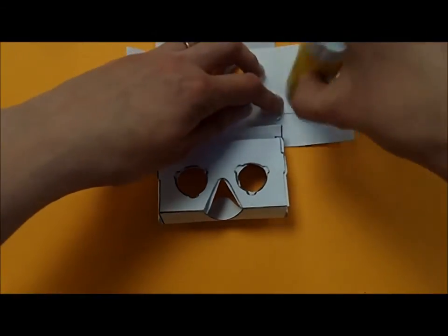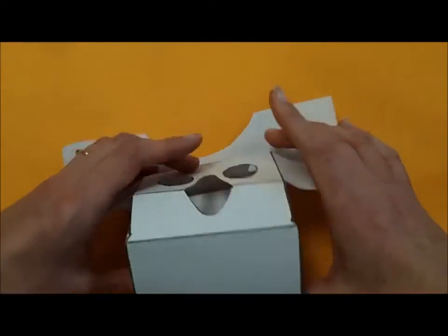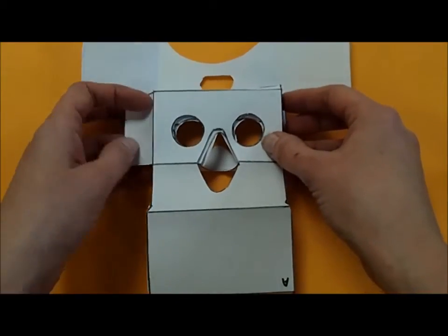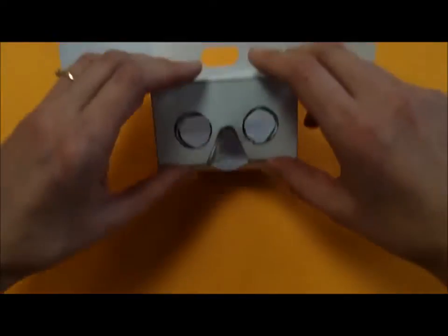We'll need to glue these two side tabs, one and that one, two, onto the side of our Google Cardboard like that. And stick that one down like that. So just gently pressing on. And again, we're going to take that over.